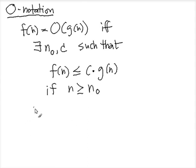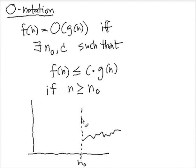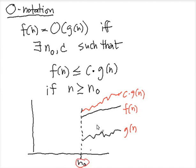This means pictorially, if you draw a graph, we only consider the point when n is larger than n₀. Suppose this is g and this is f. If you multiply g by some constant, so this is c times g(n), this is f(n). So c·g(n) remains above the f(n) after this n₀. So this is the definition of when we say f is O of g(n).